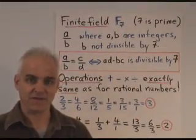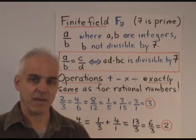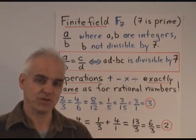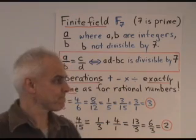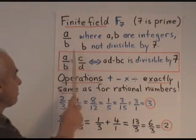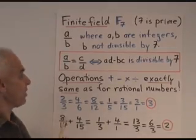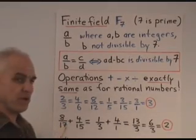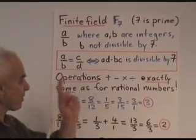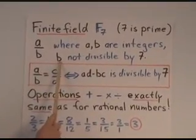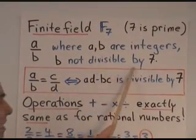Alright, now let's introduce a finite field. We'll look at a particular example, F7. We'll choose 7 because it's a prime number. So, we define the main objects to be expressions a over b, where, just as with rational numbers, a and b are integers.